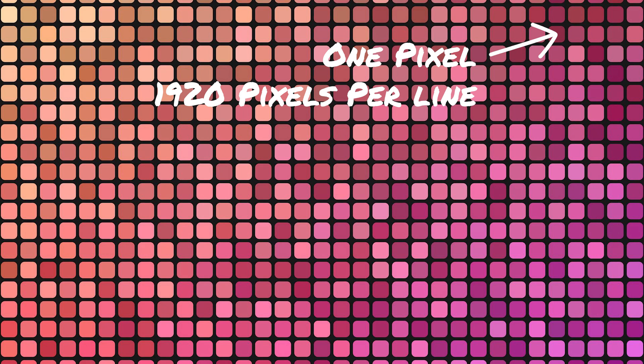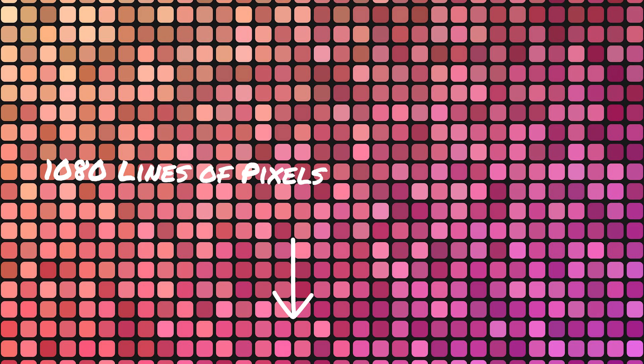The first step is understanding what these numbers represent. In the case of 1080p — often called FHD or Full HD — 1080p represents a resolution of 1920 by 1080, which means each line has 1920 pixels and there are a total of 1080 lines on a given display, hence the resolution of 1080p. It's also worth noting that the 'p' actually stands for progressive, not pixels — a common misconception.